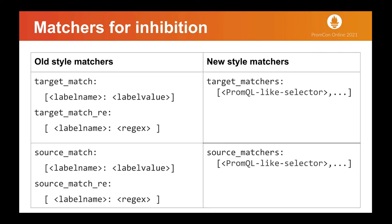Matchers for inhibition. Inhibition is a concept of suppressing notifications for certain alerts if certain other alerts are already firing. As you can see in this slide, there are two types of matchers for inhibitions. Target matchers are matchers that have to be fulfilled in the alerts to be muted, and source matchers are matchers for which one or more alerts have to exist for the inhibition to take effect. The new style combines the equality and regex matchers for both target and source, and adds support for negative matching.